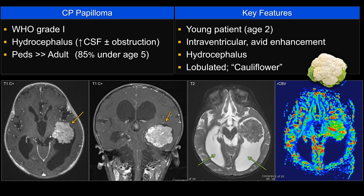This is a pediatric disease. The vast majority occur under age 5. You can see this in adults, but if you have to choose one versus the other, think of this as a pediatric tumor. Unlike other types of pediatric tumors, its common location is in the lateral ventricle, therefore supratentorial.